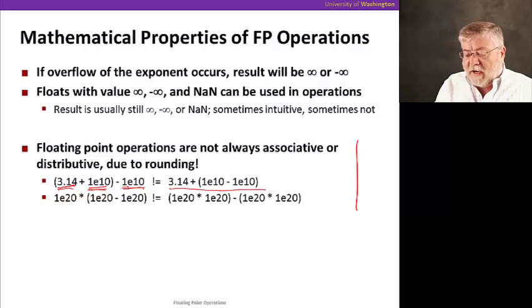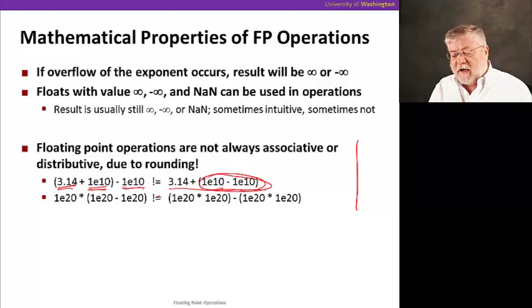While in this case, we first do the operation in the parentheses, that yields a zero. But then when we add that to 3.14, we're left with 3.14. So the results are not equal on the two sides here.